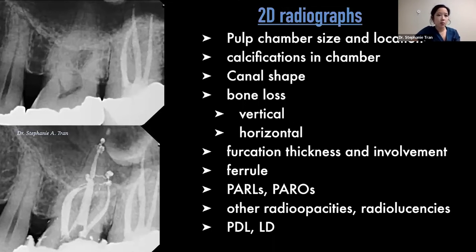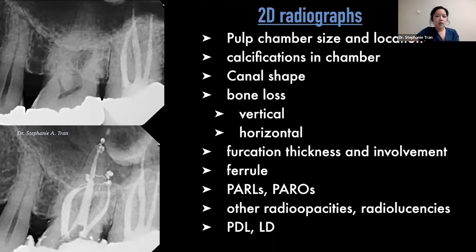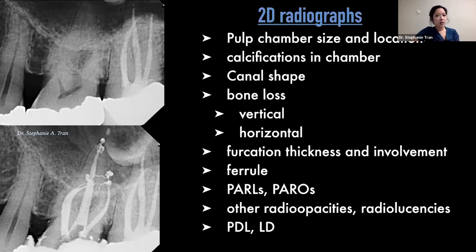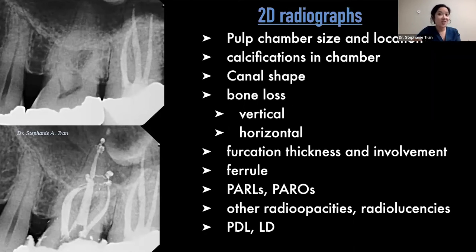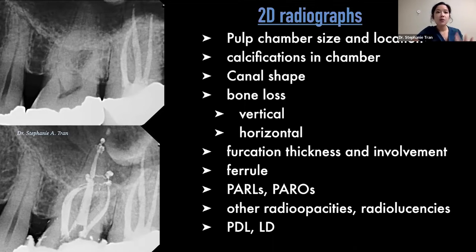On the endodontic end, we pay very close attention to the canals and the pulp and everything surrounding them. We'll be looking at the pulp chamber, anything within the chamber, how close restorations are to the pulp, how big the pulp horns are, if there's any recession in the pulp itself, as well as the shape of the canals, the quality, the differences in radiopacities and radiolucencies within the canal. Also the furcations, periapical radiolucencies and radiopacities, and other details about the periapical structures. One nice thing about webinars is that you can take screenshots of these details to help you remember what to look for.